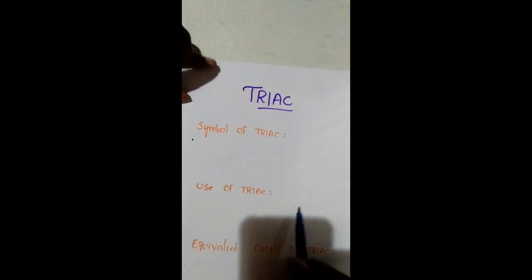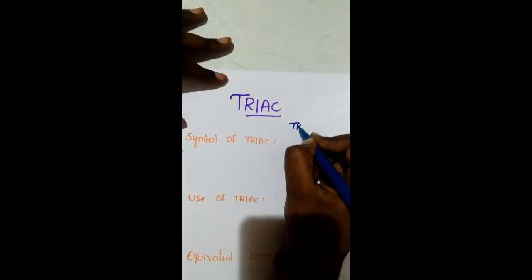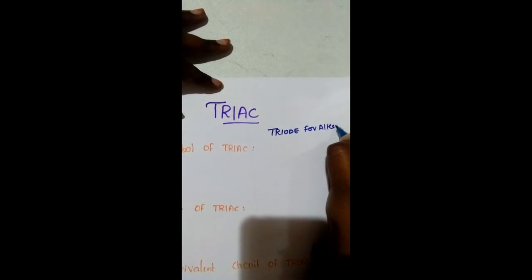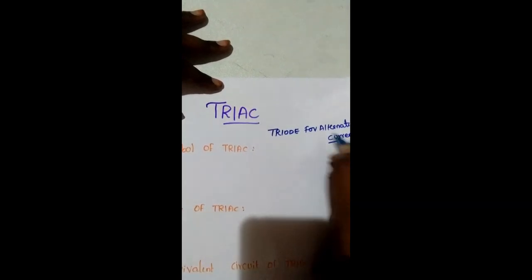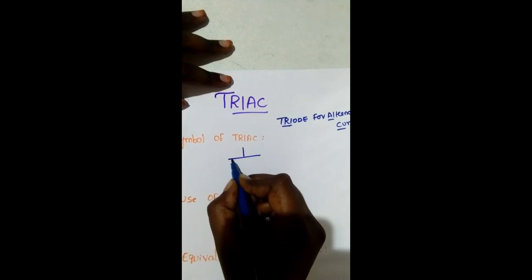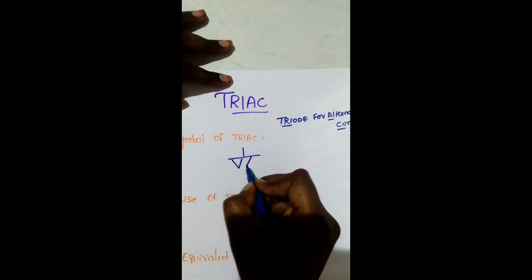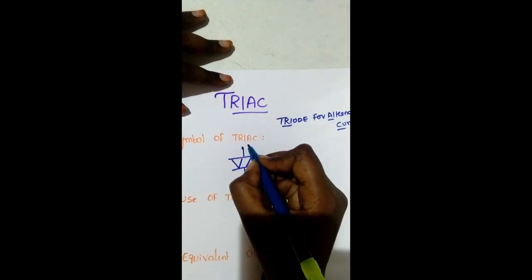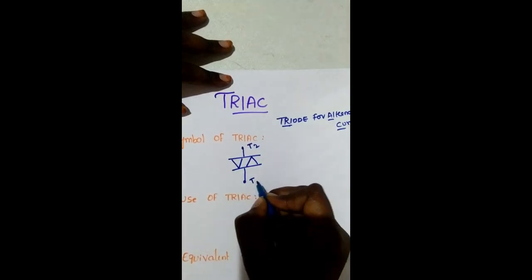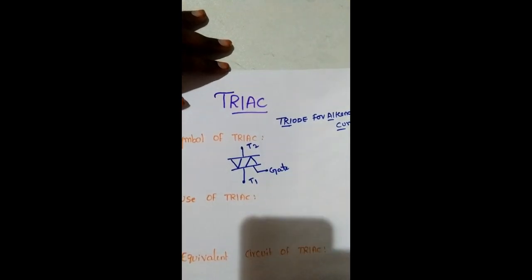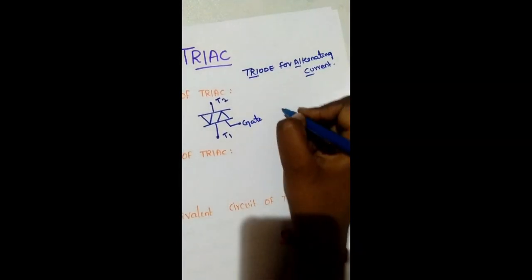Now we are going to discuss about TRIAC. TRIAC is a Triode for Alternating Current. The symbol of TRIAC has three terminals: T2, T1, and Gate. It is a bi-directional device.